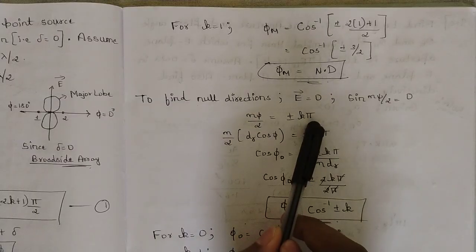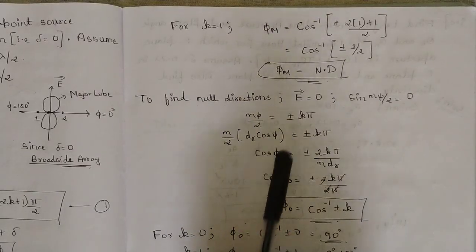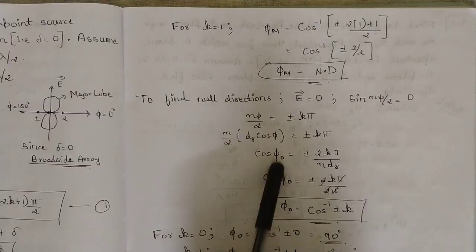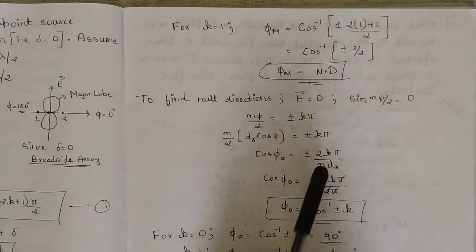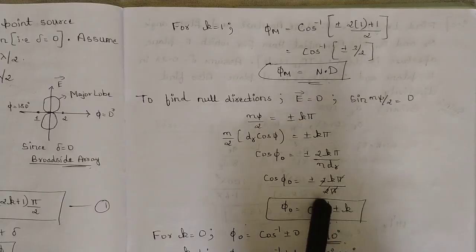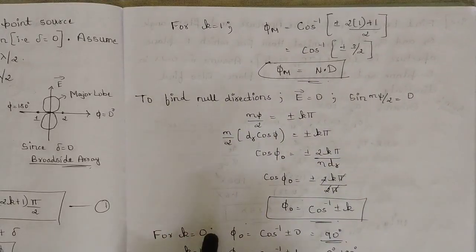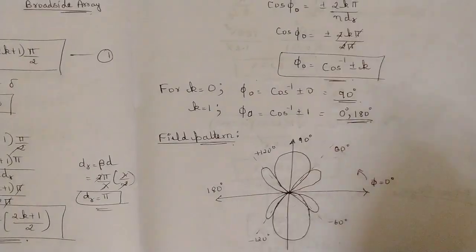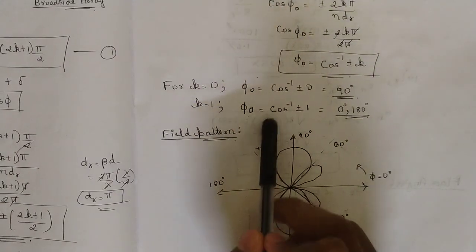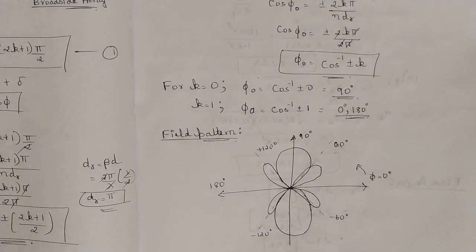Substituting ψ = d_r·cos(φ): (n/2)·d_r·cos(φ) = ±kπ, so cos(φ_0) = ±2kπ/(n·d_r). Substituting d_r = π and n = 2, the 2 and π both cancel, leaving φ_0 = cos⁻¹(±k). For k = 0: φ_0 = cos⁻¹(0) = 90°. For k = 1: φ_0 = cos⁻¹(±1) = 0° or 180°.